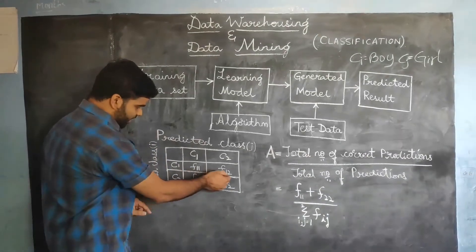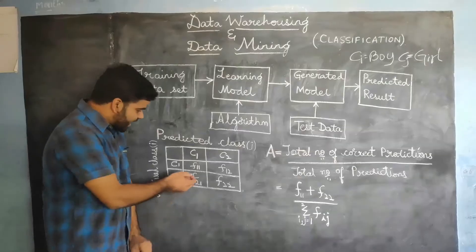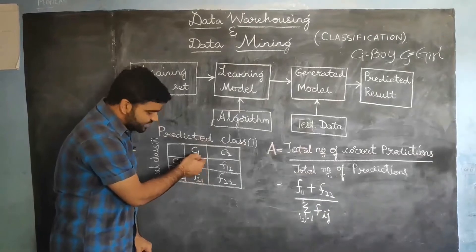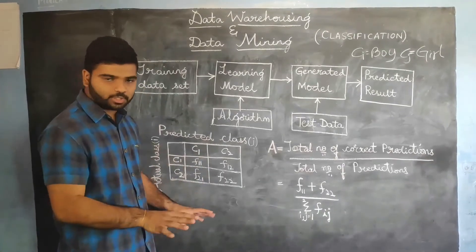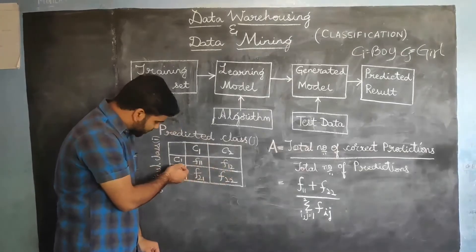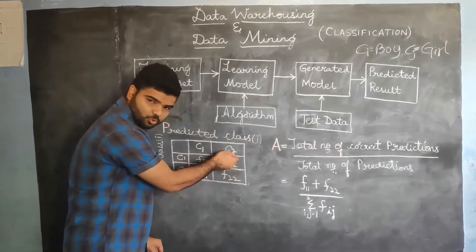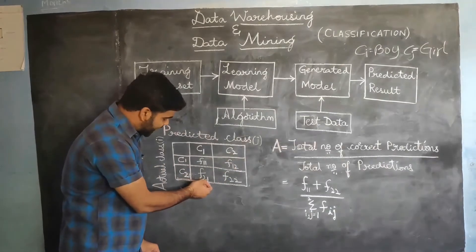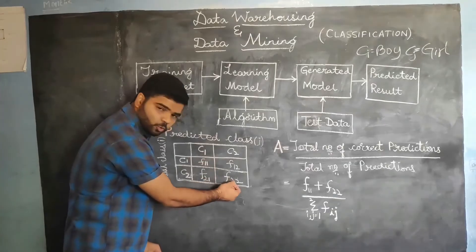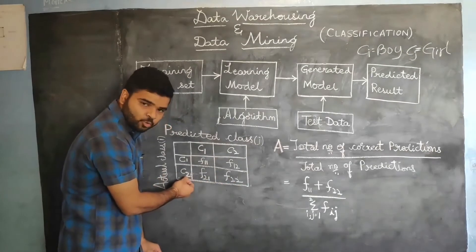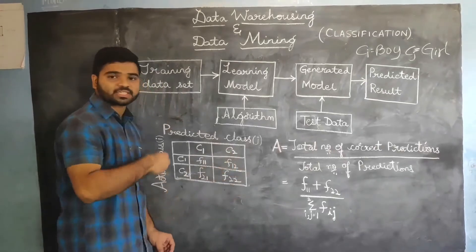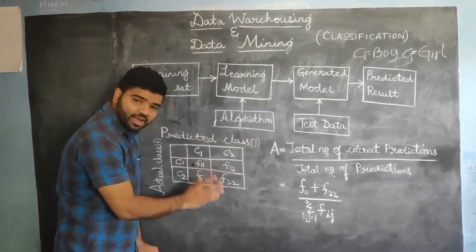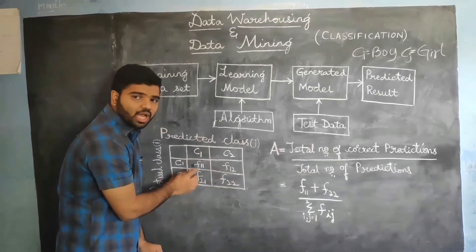F11 depicts that a record actually belongs to class C1 and is predicted as class C1 — that is, the prediction is correct. F12 is actually of class C1 but predicted as class C2. F21 is actually of class C2 but predicted as class C1. F22 is actually class C2 predicted as class C2 — again a correct prediction. So F11 and F22 are the correct predictions, whereas F12 and F21 are the wrong predictions.